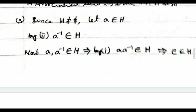Since H is non-empty, let a belong to H. By condition two, a inverse belongs to H. Now, both a and a inverse belong to H. By condition one, a dot a inverse belongs to H. This means the identity element belongs to H.